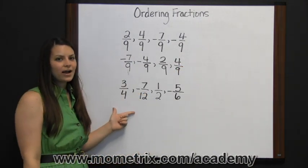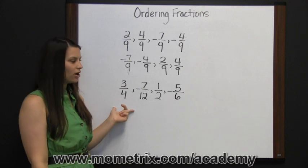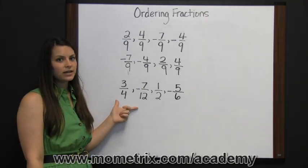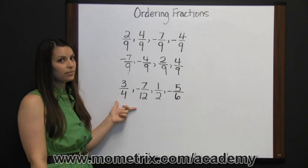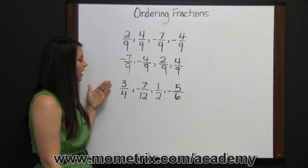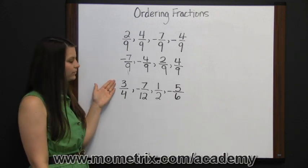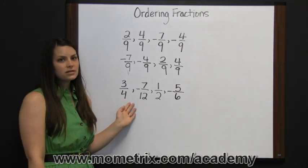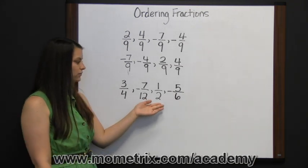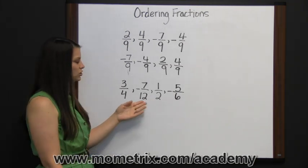Now let's look at some fractions that don't have the same denominator. For these fractions, we could first find the least common denominator, or LCD, so that we could have all the same denominator, and then order them by the numerator. The least common denominator for four, twelve, two, and six would be twelve.